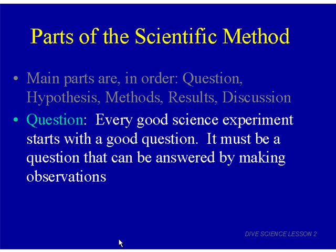Sometimes there are things you can't see, like the wind. You can't see the wind, but you can see its effects and feel it — you know it's there. If you have some method of collecting information about that wind, you could do a science experiment on it. As long as you have some way to make observations, that's how a good science experiment starts — with a question that can be answered by making observations.